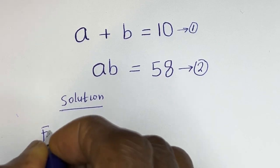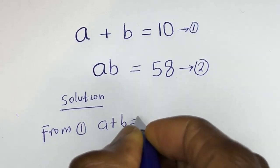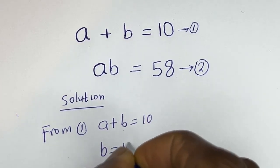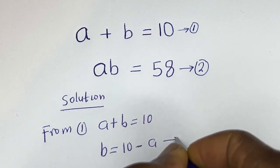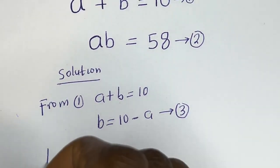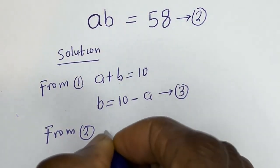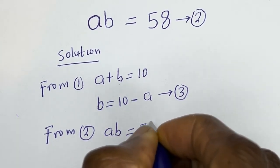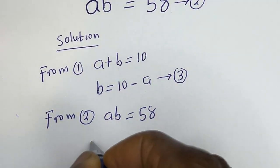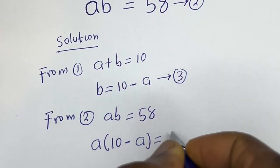Now from equation 1, a plus b is equal to 10. Let's make b the subject of the formula: b is equal to 10 minus a. Let's call this equation 3. Also from equation 2, ab is equal to 58, and we know that b is equal to 10 minus a, so a times bracket 10 minus a is equal to 58.